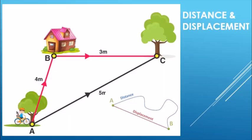So what is distance? Distance is the length of the route actually travelled by a moving body, irrespective of direction. This is called distance. Distance is a scalar quantity, which means it is only measured in magnitude.